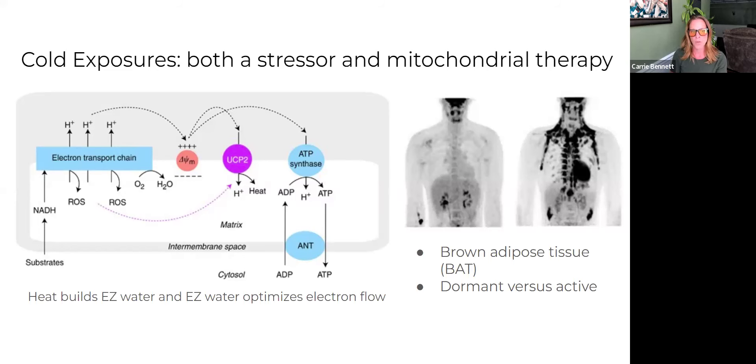And when the body starts, when body temperature starts to decrease, mitochondria actually do something called uncoupling where instead of optimizing electron transport chain flow, instead they allow the flow of protons back into the inner membrane space, the matrix of the mitochondria.